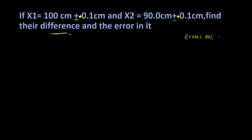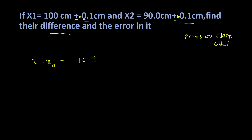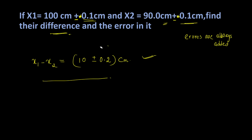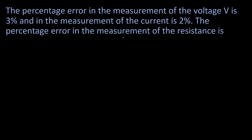We must always remember that errors are always added — whether we subtract or add the quantities, errors are always added. For example, 100 plus 90 equals 190 with error plus minus 0.2 — errors are added irrespective of the operation.